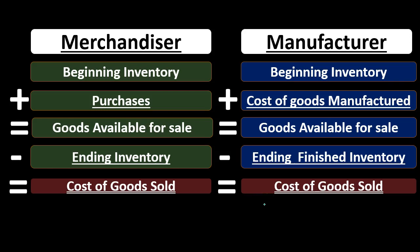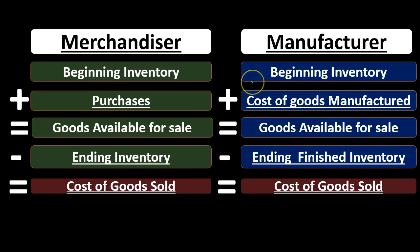The two formulas are very similar. Note that you can use this formula not just to calculate cost of goods sold — multiple choice questions will often rearrange things so you need to solve for different items. You don't want to memorize a separate formula for each unknown. Instead, write down this formula and use algebra. If cost of goods sold is given and beginning inventory is unknown, simply back into it algebraically.